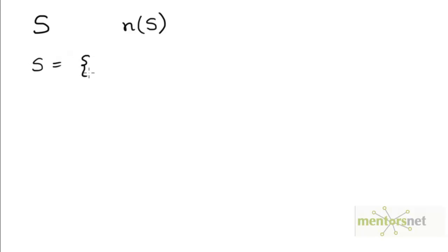For example, if S is a set of integers from 1 to 6, then the number of elements in the set S will be 6. If S is the set of natural numbers, then the number of elements in the set S will be infinite.